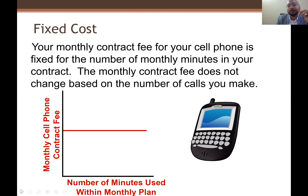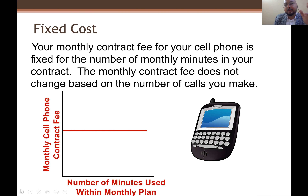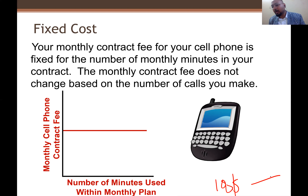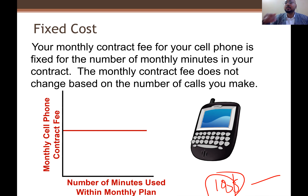For fixed cost: what if you are given the chance to pay a fixed amount at the start of the month and send as many messages as you want? For example, your monthly contract fee for your cell phone is fixed. The monthly contract fee does not change based on the number of messages you make. If you pay $100, you can send whatever number of messages — even one message, the monthly cost is $100.